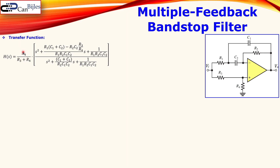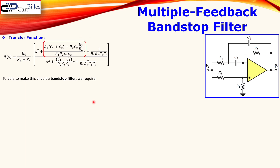We also see a voltage division term made by R4 and R3. To make this circuit work as a proper band stop filter, we need the transfer function to be comparable with the standard second-order band stop filter form. That means we need to make a specific term completely zero — which means making the numerator zero.